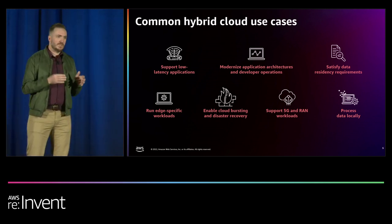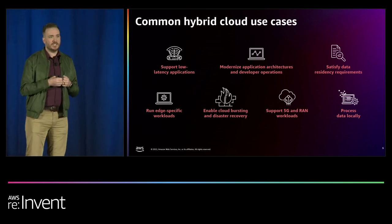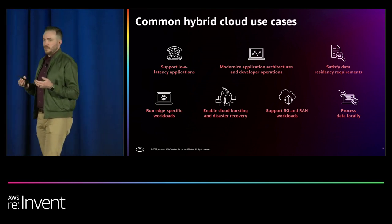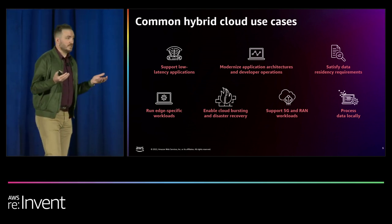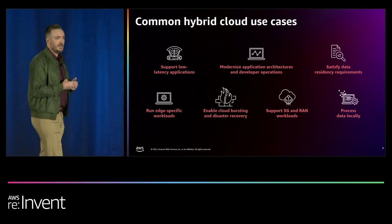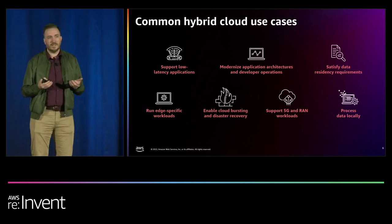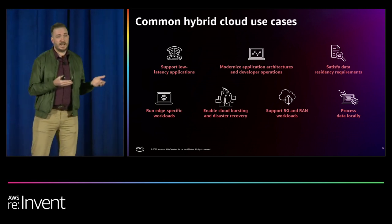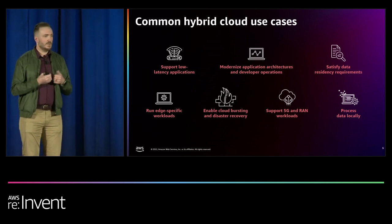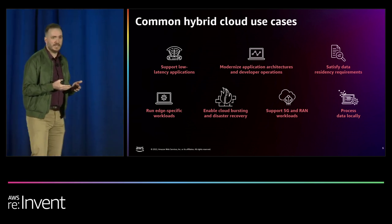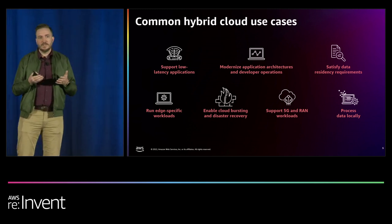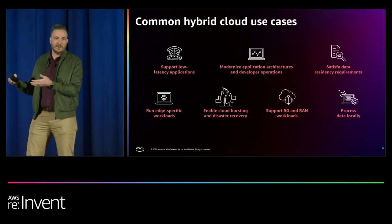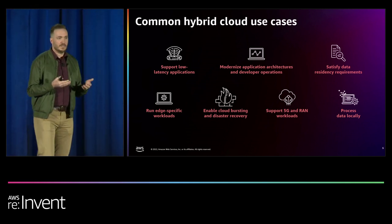The second use case we see a lot is wanting to modernize your applications in your data center before you move them to the cloud. A lot of customers have purchased a bunch of servers and have them in their data center. They don't want to have sunk costs there — they're amortizing them over a certain number of years. They do want to move those applications one day to the cloud, but they don't want to lose the sunk costs on that hardware. So they ask: can you help us run Kubernetes on-prem on commodity hardware — Dell boxes, Lenovo, whatever — in our data center?